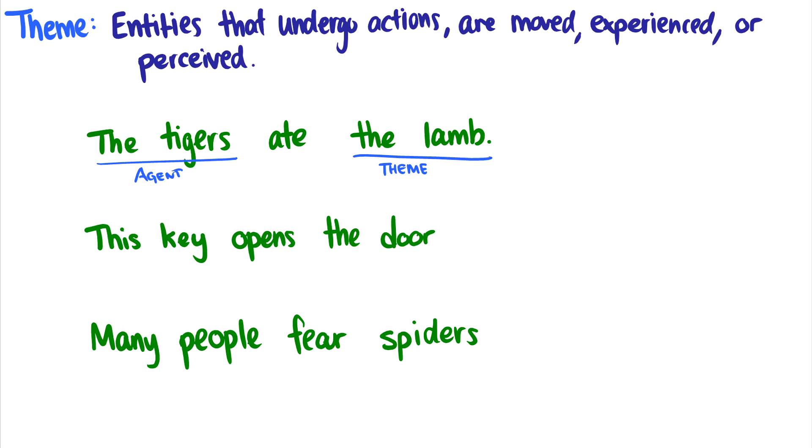What about this key opens the door? Well, the door is just chilling there. And then suddenly it's moved. It's opened. So the key opens the door. This key, again, it's an agent. It's a little bit different of an agent. It's not a sentient agent, but the key is the one that is actively opening the door.